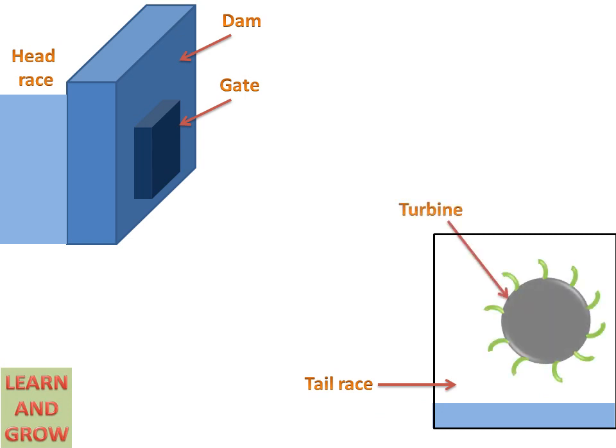In tail race we have a turbine, and between the tail race and head race there is a penstock which will work for the water transfer from the dam to the turbine. And at the end of the penstock there is a nozzle for increasing the velocity of the water particles.